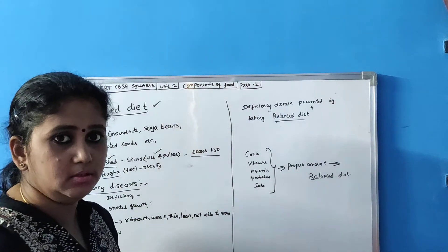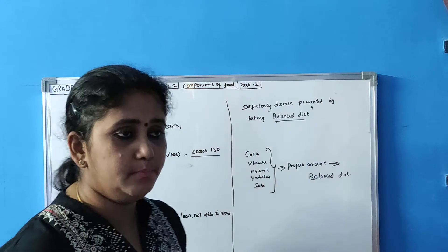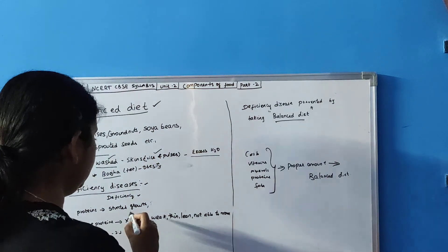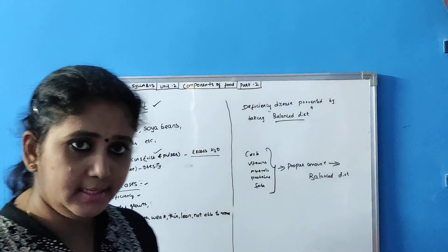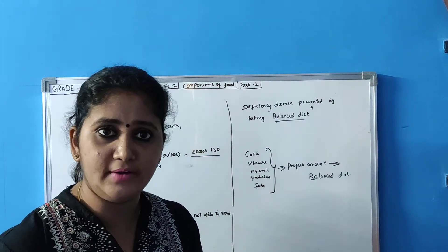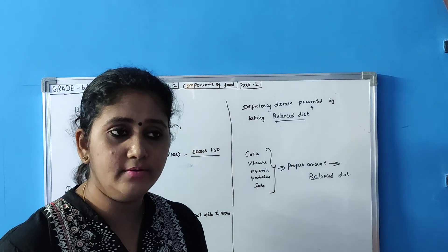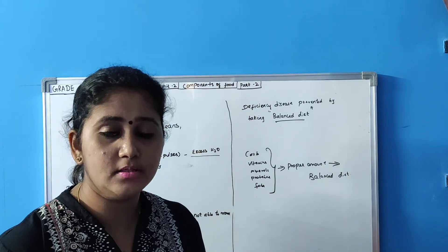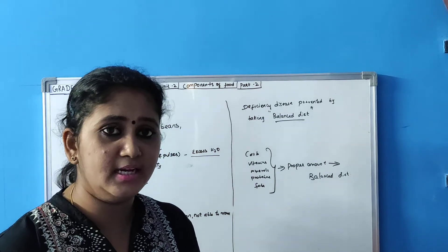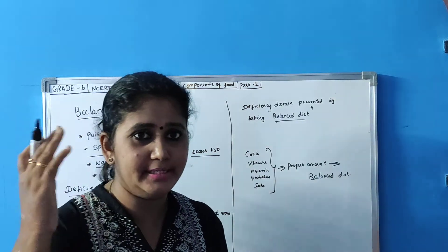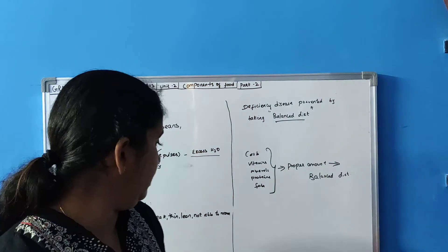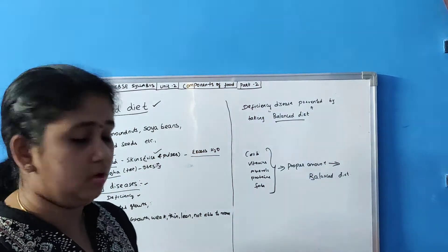Lack of proteins in your food can result in stunted growth — meaning the person will not grow beyond a certain height. It can also cause discoloration of hair, where hair becomes white or grey, along with many other diseases.